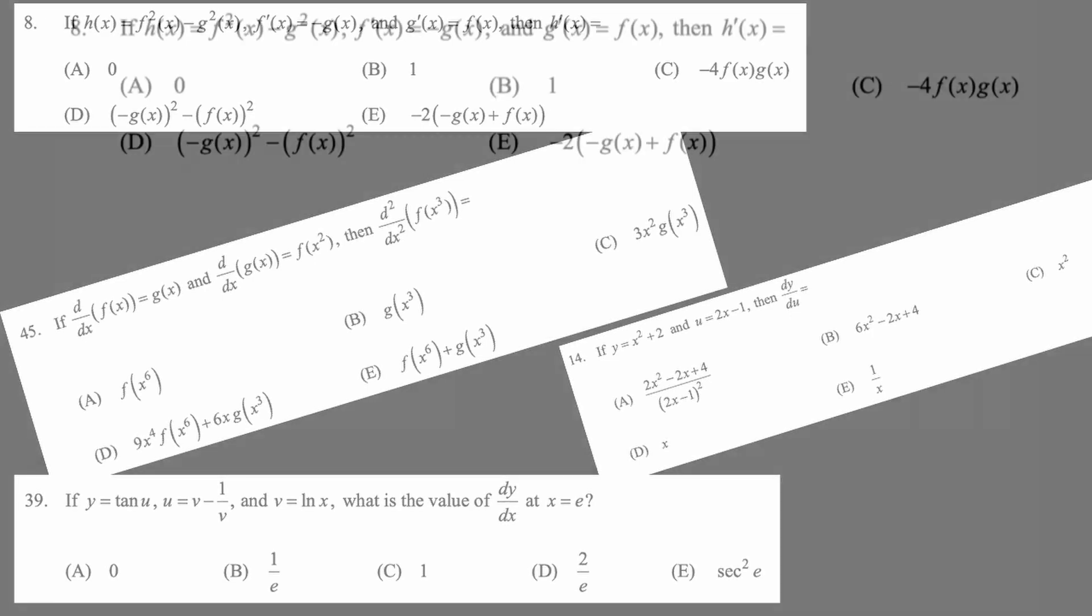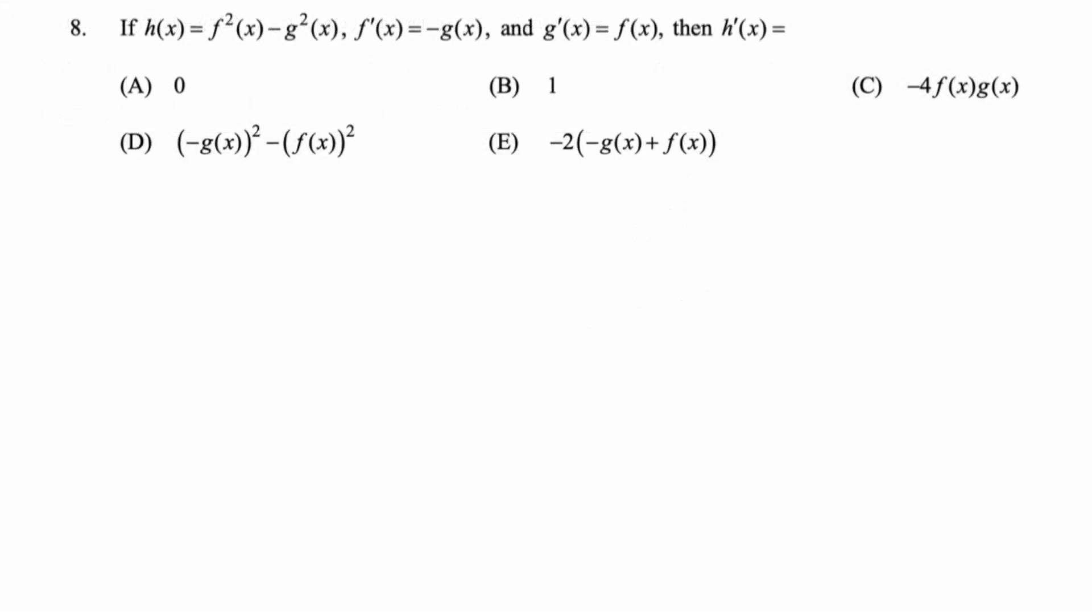Okay, in this video we're going to do four good chain rule problems, so let's take a look. We got if h(x) is f²(x) - g²(x), f'(x) = -g(x), and g'(x) = f(x), then h'(x) equals. So you can see there's a lot of function switching going on here. What I'm going to do is rewrite h(x) but color code it.